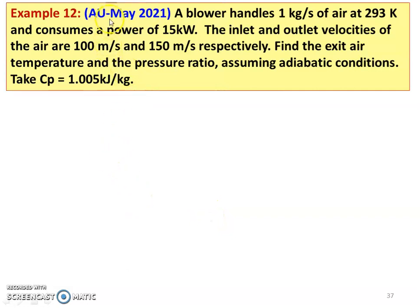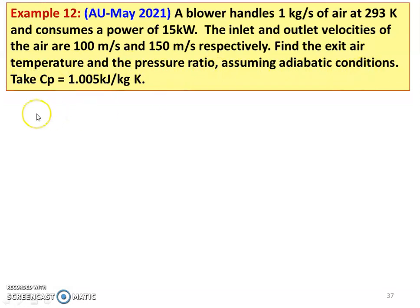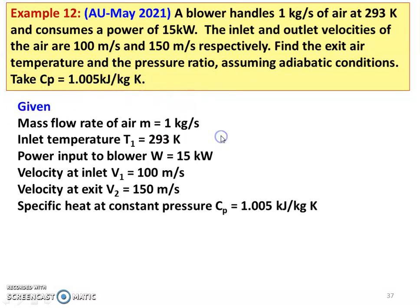The next question is from the May 2021 question paper. A blower handles 1 kg per second of air at 293 kelvin and consumes a power of 15 kilowatt. The inlet and outlet velocities of air are 100 meters per second and 150 meters per second respectively. Find the exit air temperature and pressure ratio, assuming adiabatic conditions. Take Cp = 1.005 kilojoules per kilogram kelvin.